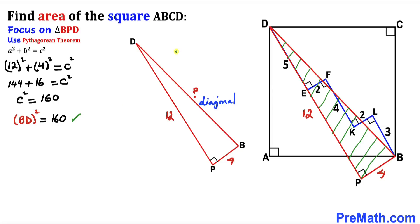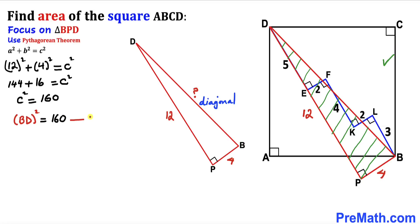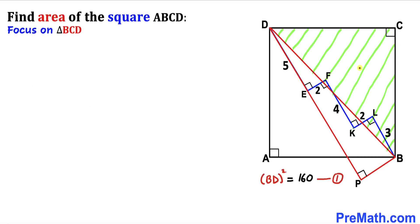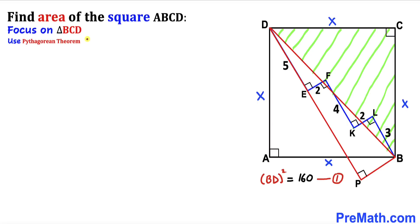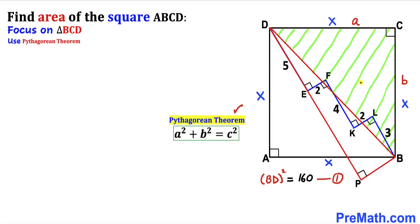Now let's focus on right triangle BCD. Since we are dealing with square ABCD, all side lengths are congruent — if we call this side X, then all side lengths are X units. We apply the Pythagorean theorem again: A² + B² = C², where leg A is X, leg B is X, and the longest side C is the diagonal BD of square ABCD.